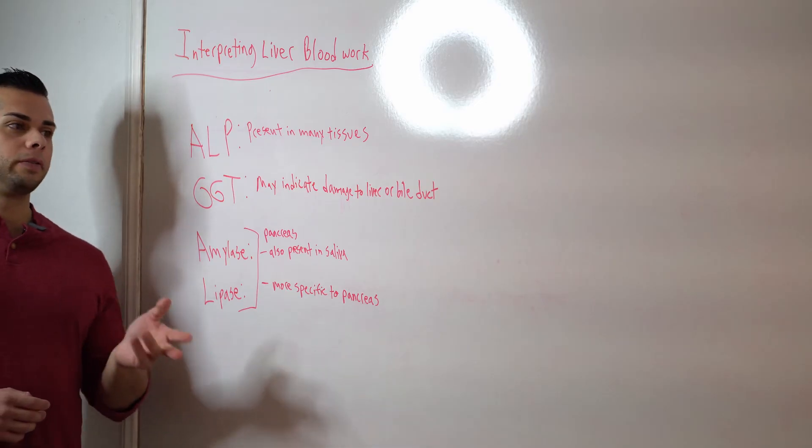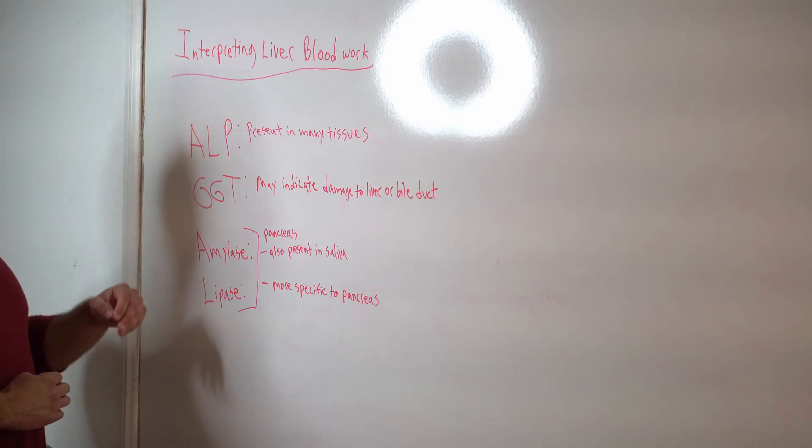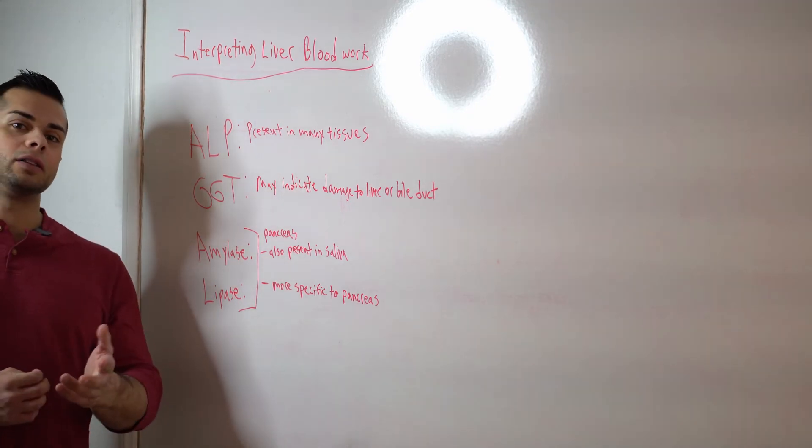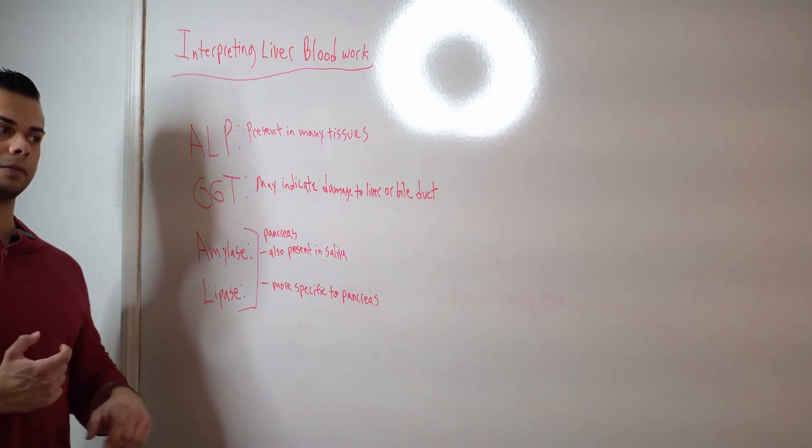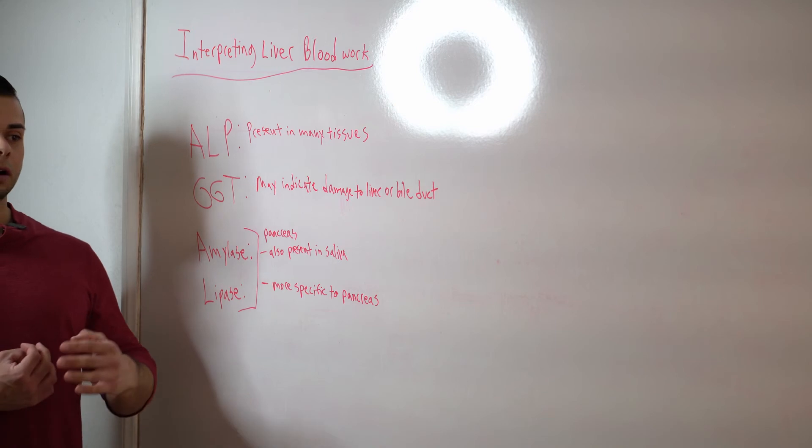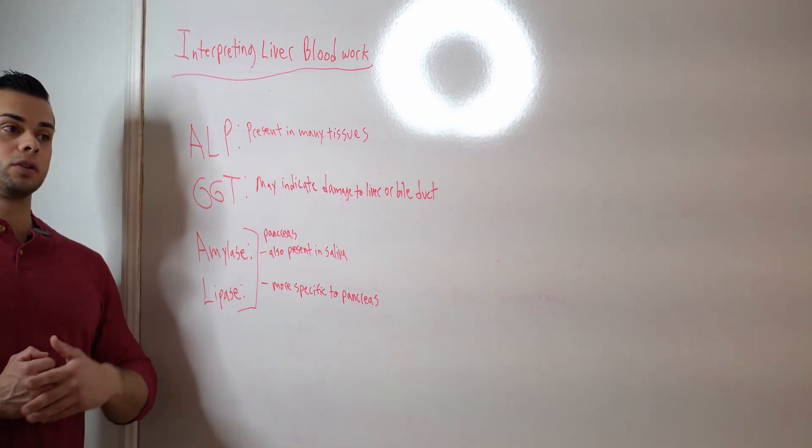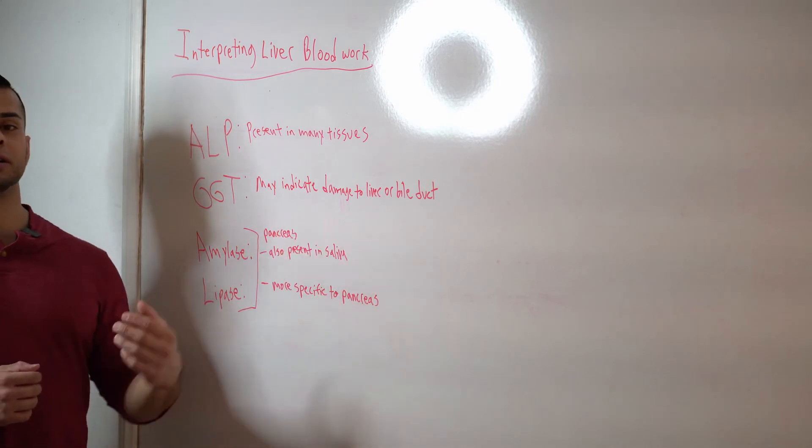Now I'm going to go over a couple of other blood work results that we could have that could be in relation to the liver. ALP. So ALP is also present in other tissues in the body. So if this is elevated, again, it's not a complete indication that there is something wrong with the liver. We would have to look at something like ALT, for instance.